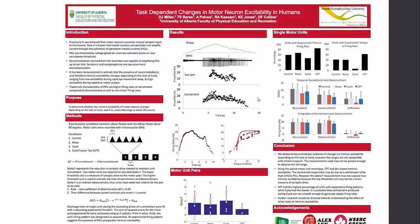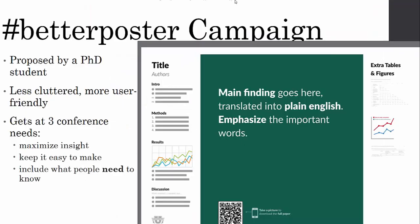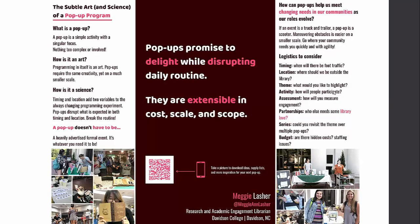There's also a newer standard being used by students and researchers, proposed by a PhD student, that looks less cluttered and more reader-friendly. It addresses three major conference needs: it maximizes insight by making one main point very clear, it's easier to make since you put the main point right in the middle, and it focuses on what you want people to know. The example shown has a title, a central 'this is what I want you to know' statement, associated people, pictures, and brief sections on what was done and how it worked.